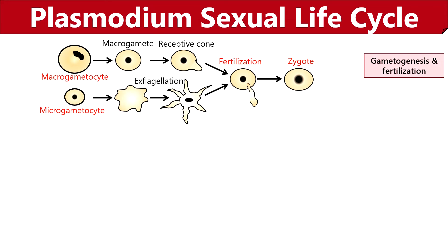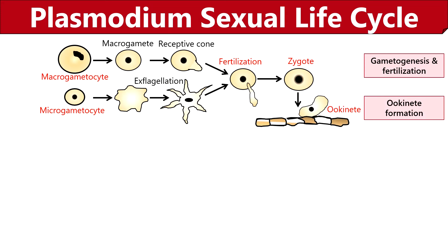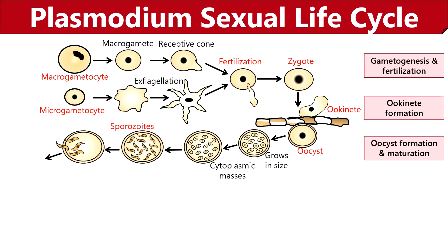It starts with gametogenesis and fertilization. When a female Anopheles mosquito sucks the blood of a person infected with malaria, the gametocytes enter the midgut of the mosquito. There, the macrogametocyte differentiates into a female gamete or macrogamete that eventually transforms into a receptive cone, whereas the microgametocyte differentiates into 6-8 flagellar-like microgametes through ex-flagellation. The motile microgametes freely move in the stomach and fuse with the non-motile macrogamete. The fertilization between male and female gamete forms a spherical zygote, and after several hours the zygote differentiates into an ookinete stage. Then the ookinete reaches the midgut epithelium through gliding motility, where it penetrates the peritrophic matrix and encysts into an oocyst in the midgut basal lamina.